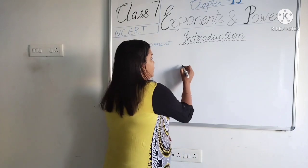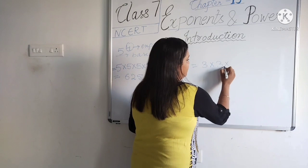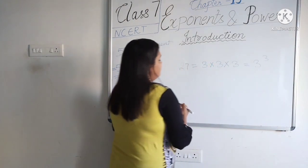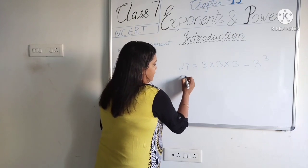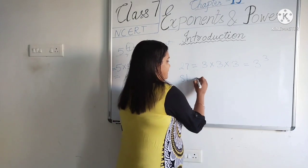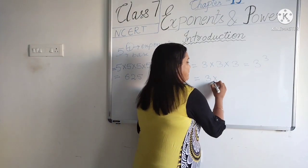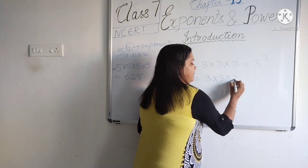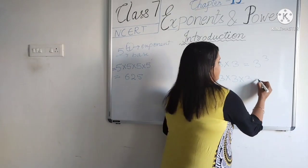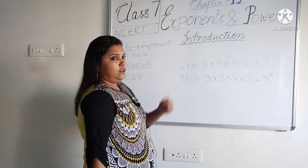In the same way, we can write 27 as 3 × 3 × 3, which equals 3 raised to the power 3. Now try to find out how we can express 81: it is 3 × 3 × 3 × 3, which equals 3 to the power 4.